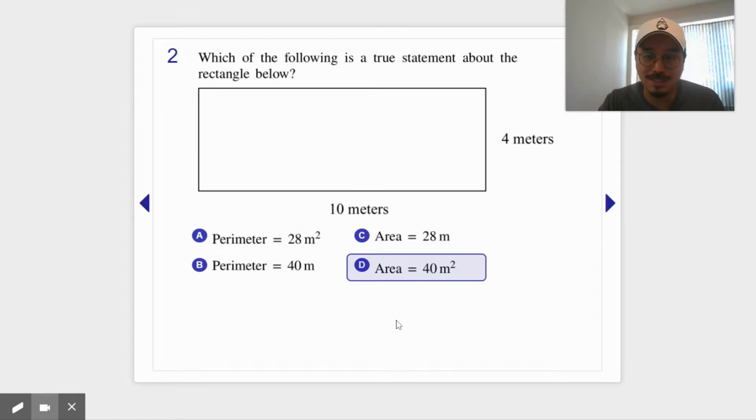It's only D. If you got perimeter of 28, I'm not saying you're wrong, but the unit they use is wrong, so therefore that's the wrong choice. Remember, this is multiple choice.